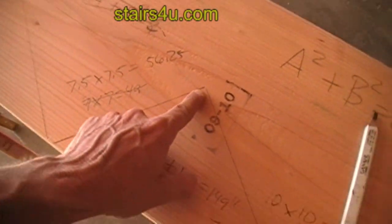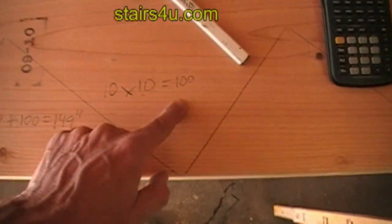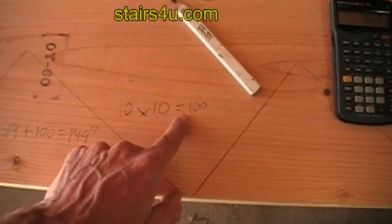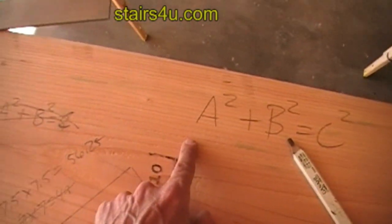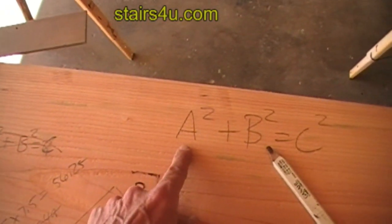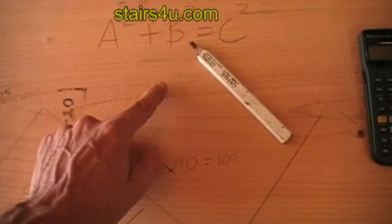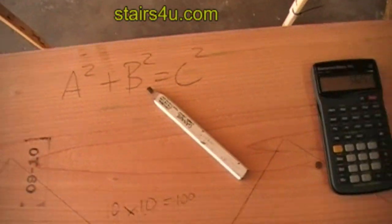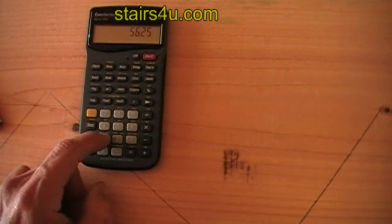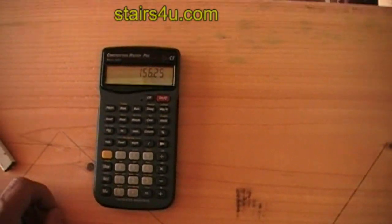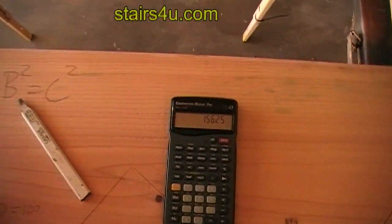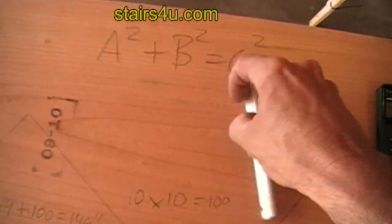And we have the square of the tread. So we're going to add 'a', which is 56 and a quarter, and 100, which is 'b'. Let's add 100 to this: plus 100 equals 156 and a quarter. We can write that number down here.